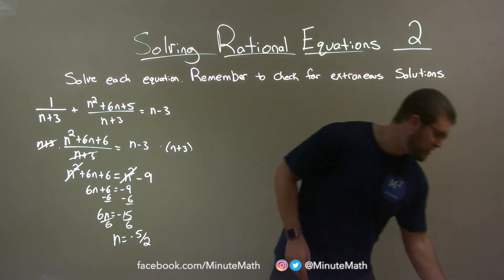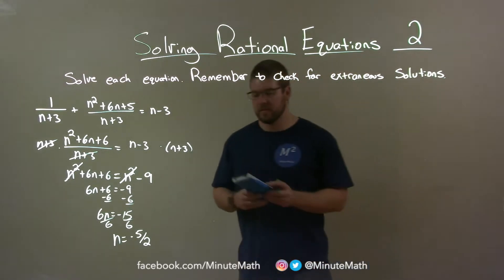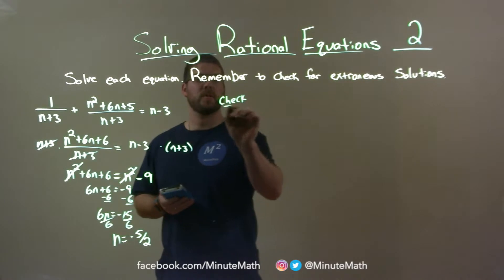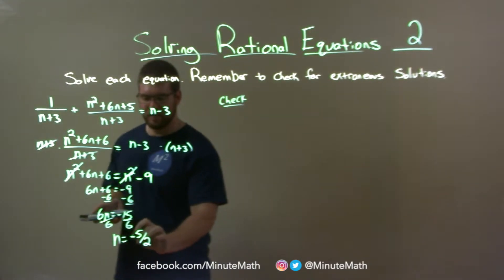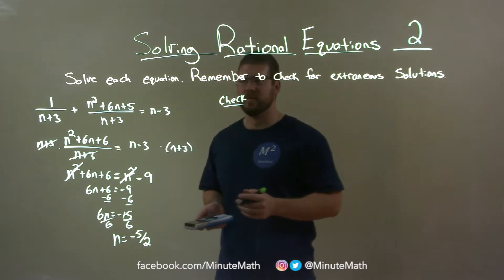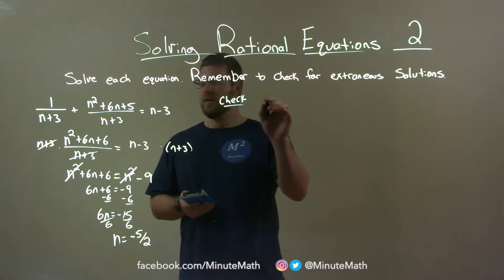So, now they tell us that we should check for an extraneous solution. So we gotta check here, and to do that, we're gonna plug negative 5 halves in for n, and see if the left and right hand side are equal in our original equation. So, let's do that.